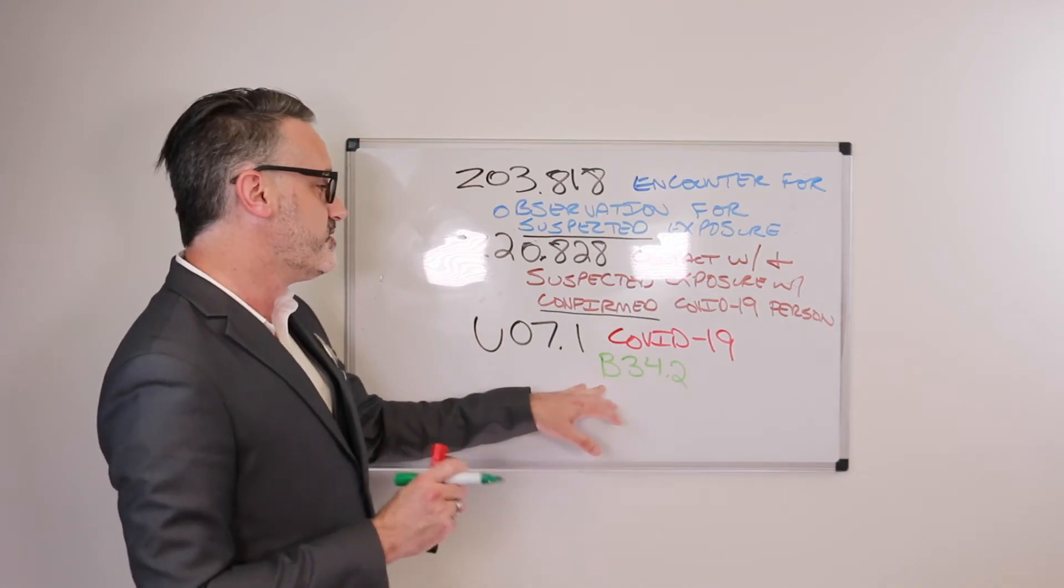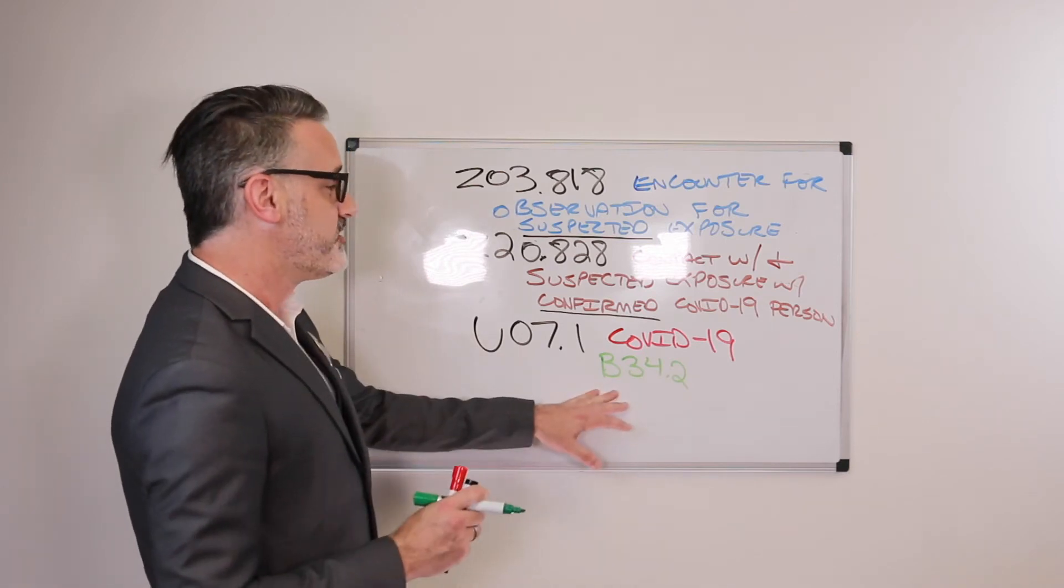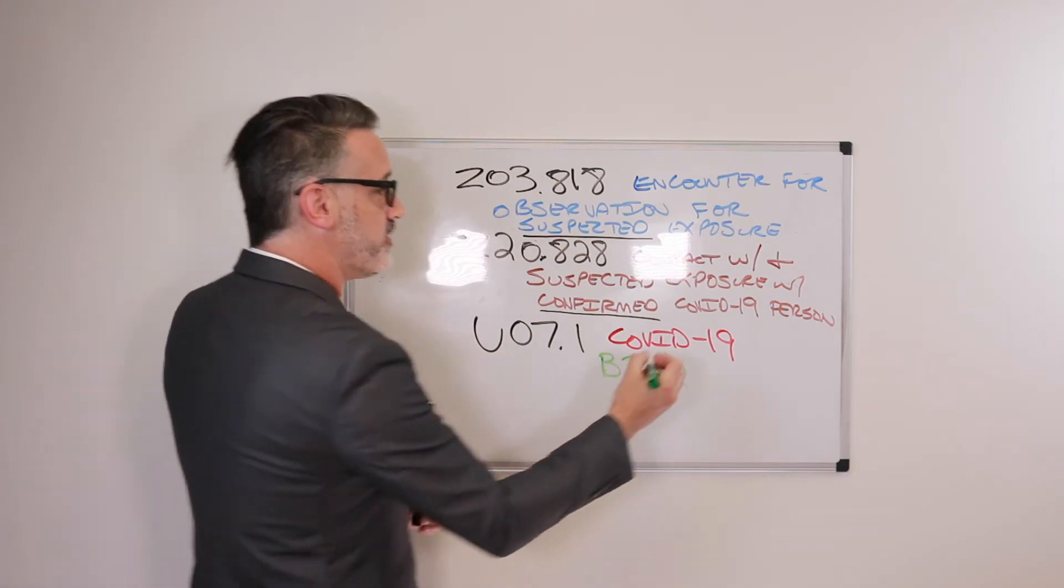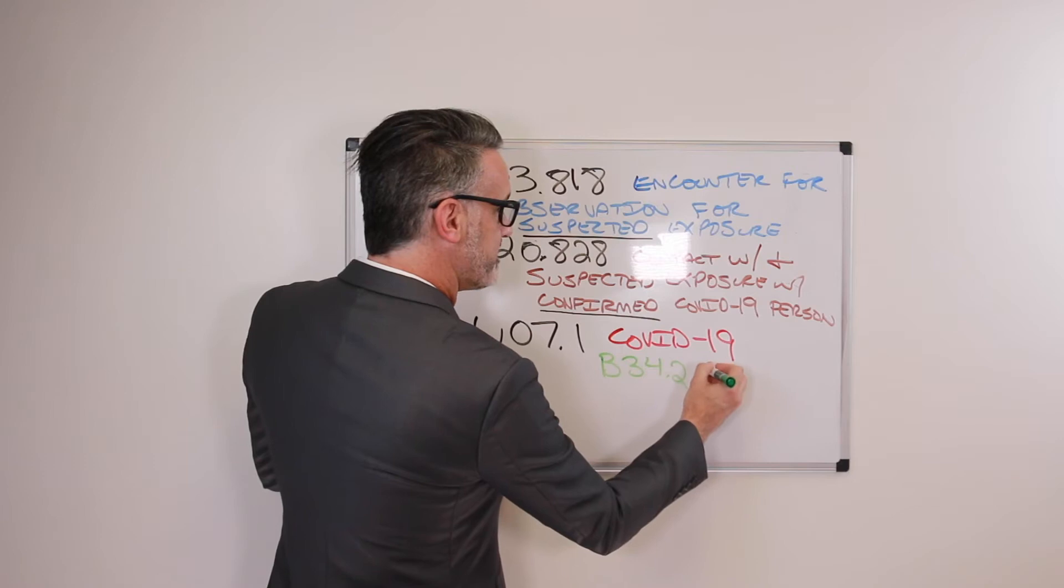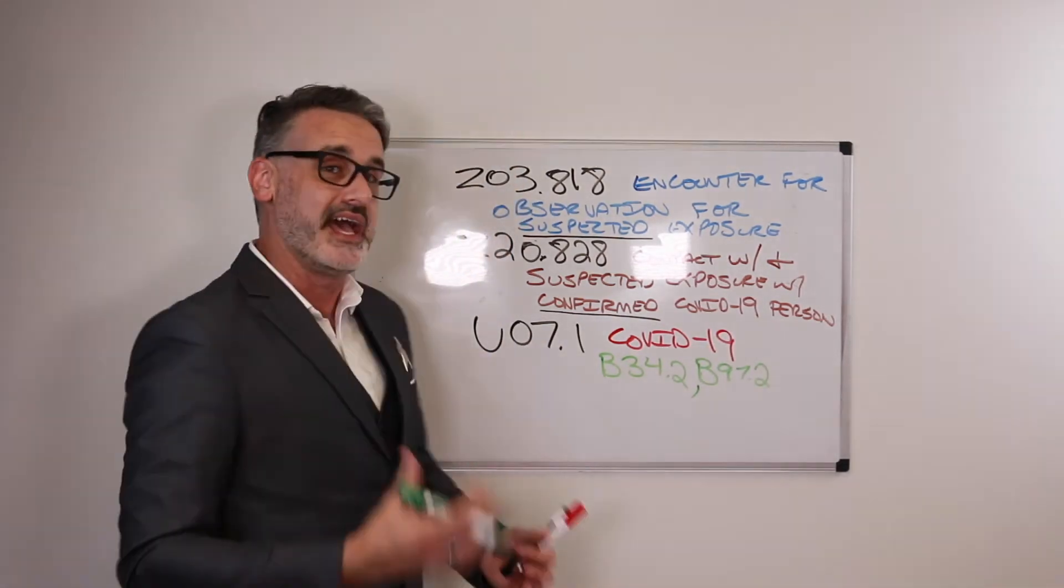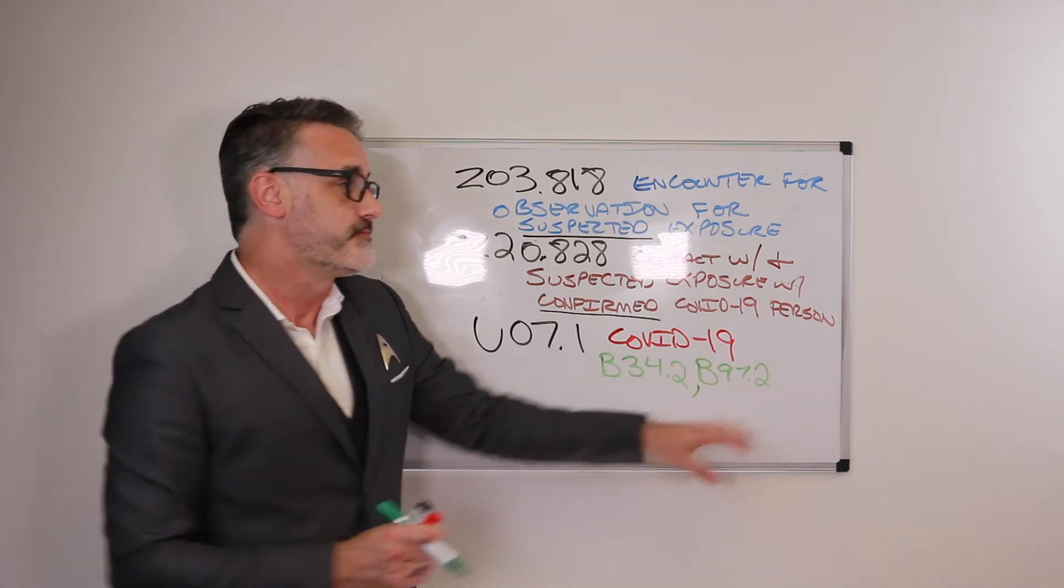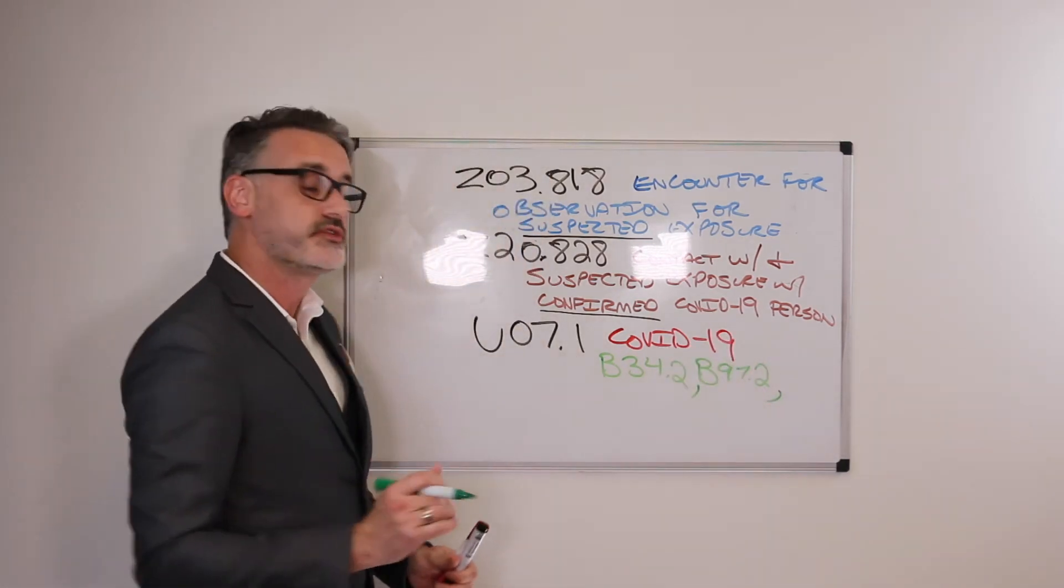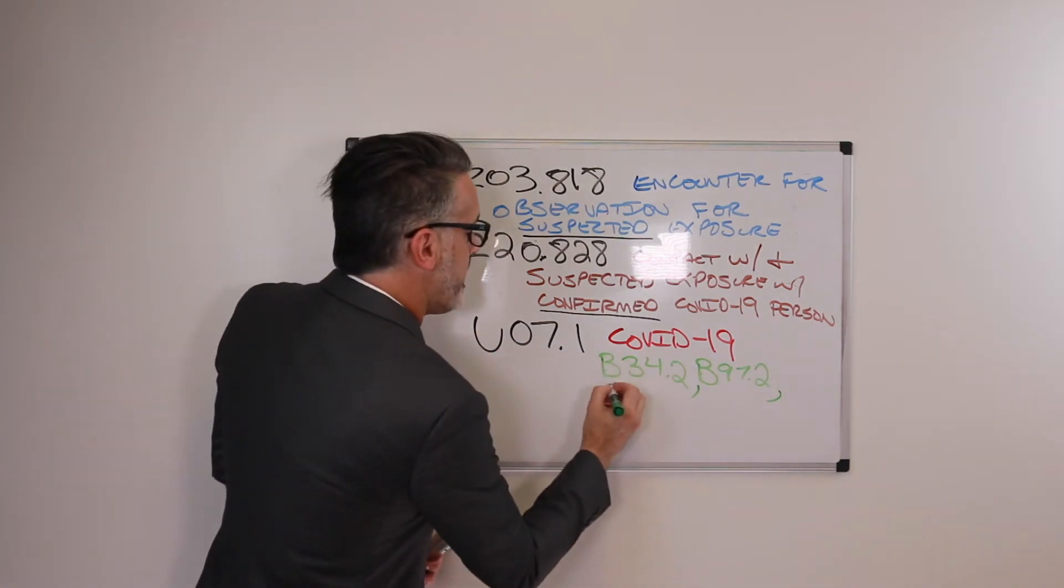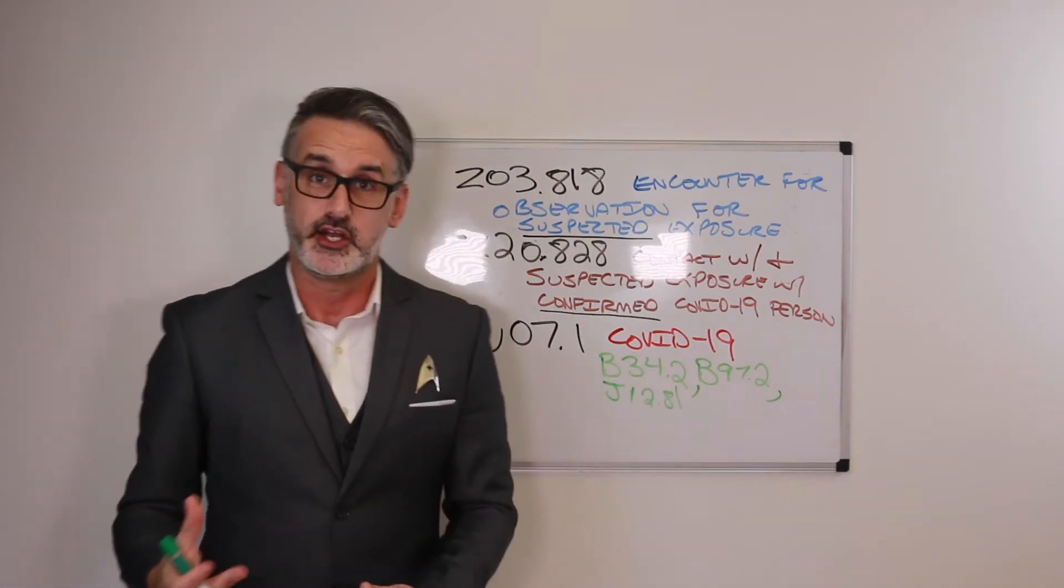So the U07.1 positive COVID-19 testing. So again, the first excludes1 code is B34.2 for coronavirus infection unspecified site. Then we also have B97.2 for the second excludes1 code, for coronavirus as a cause of disease. And then the third and final excludes1 code under the U07.1 for COVID-19, the third excludes1 code is J12.81 for SARS.